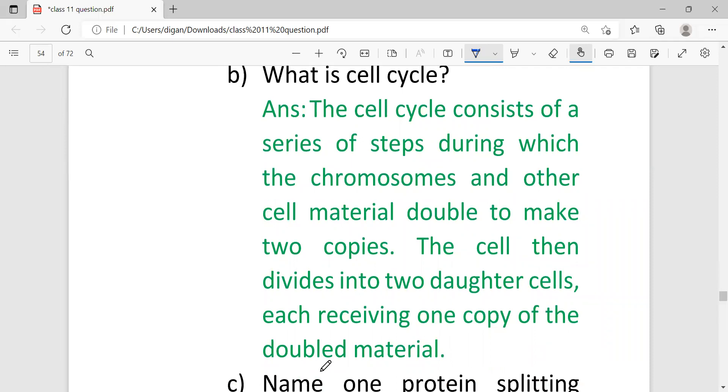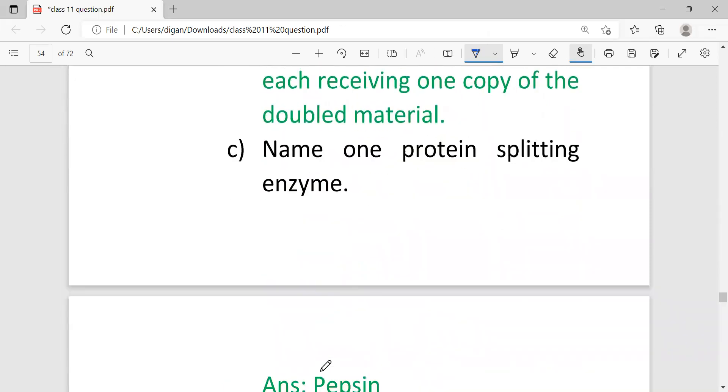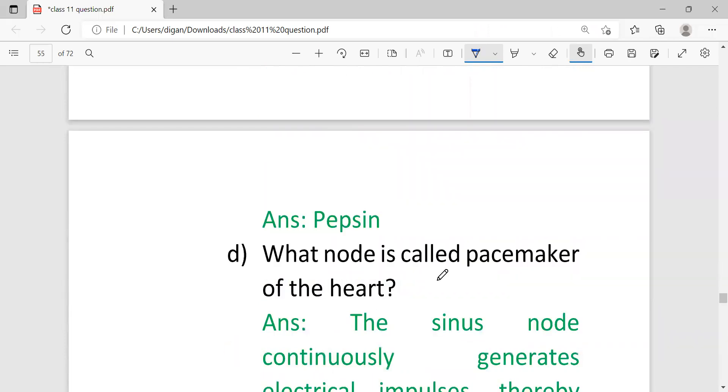Question three: name one protein splitting enzyme. The answer is pepsin. What node is called pacemaker of heart? The answer will be SA node, the sinus node.